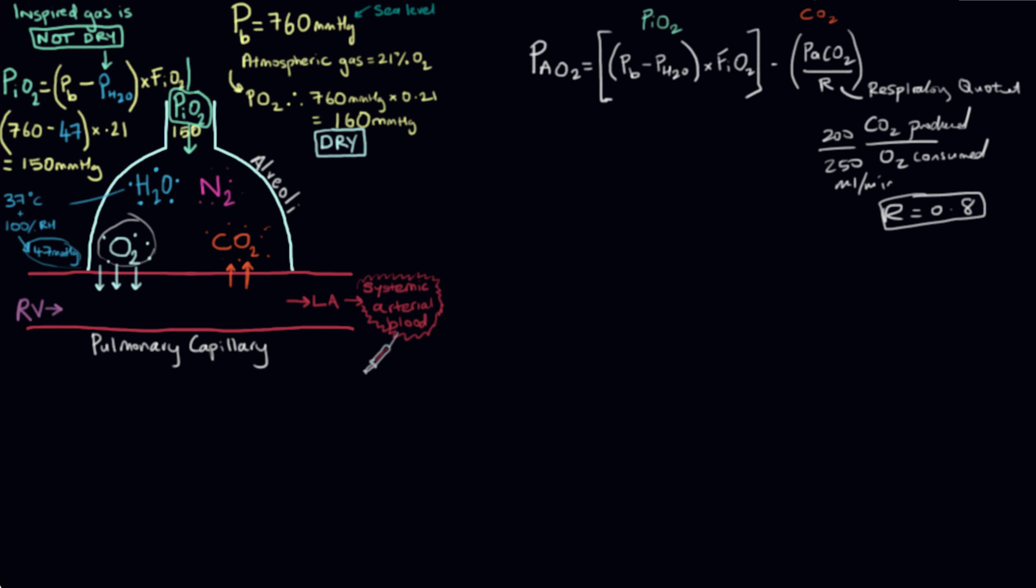So once we do that, let's get some numbers. We know that under normal conditions, our PIO2 was 150 millimeters of mercury, but let's do the working again just so that it's consistent. So we have 760, and this is all millimeters of mercury, minus 47 for the water vapor, times 0.21. That's our PIO2.